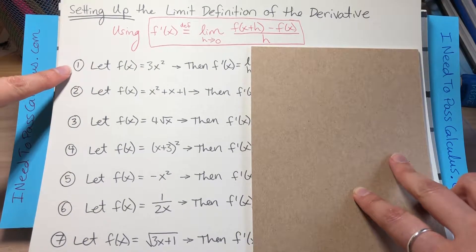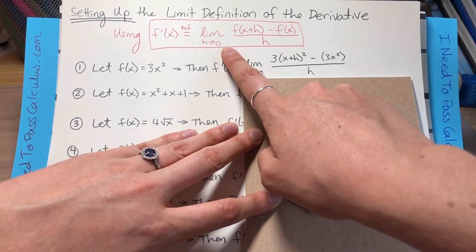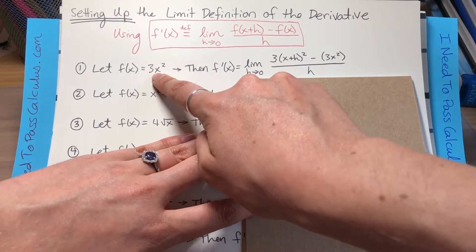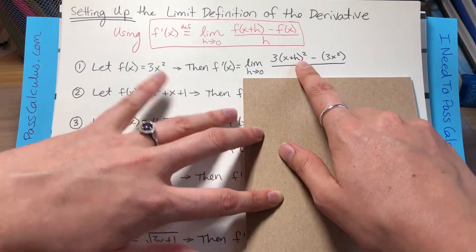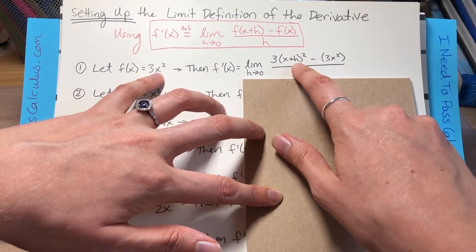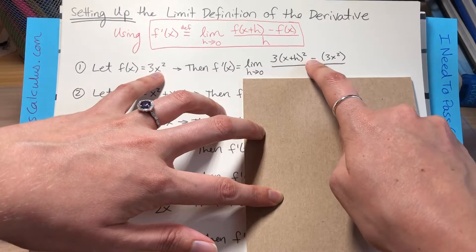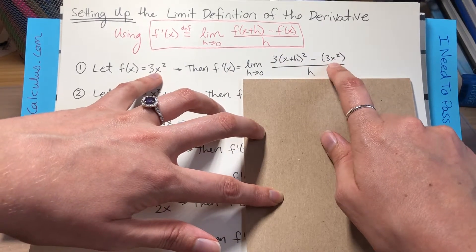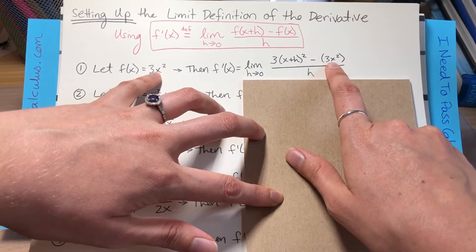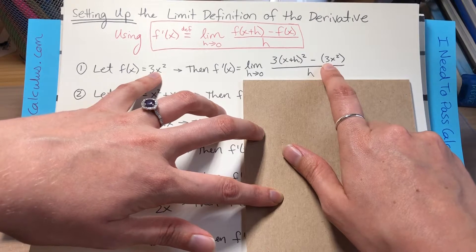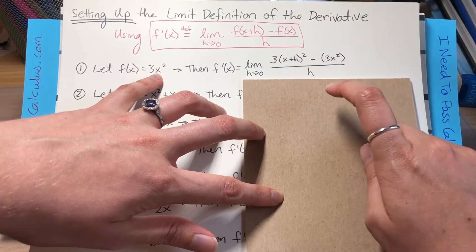For problem one, we have f(x) = 3x². What you need to do when plugging into this limit definition of the derivative is anywhere you had an x in the original function, you're going to put in parentheses (x + h). So there's an x here, so we just copy and paste x + h. That's the first part in the numerator representing f(x + h). After that, you always do minus and then just an original copy of the original function — in parentheses, 3x². In this case it's only one term, so you don't have to put parentheses, but it's a good habit because if the function has more than one term, you need to make sure that the negative sign distributes to every single term.